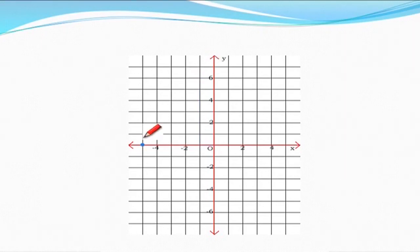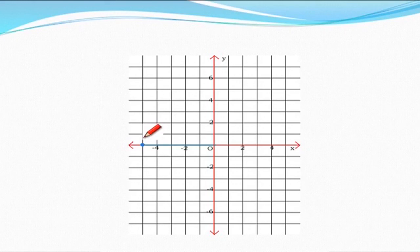Another point is on the x-axis, so its y-coordinate is 0. The point is placed at 5 units to the left of the origin, so it is -5. The coordinates will be (-5, 0).